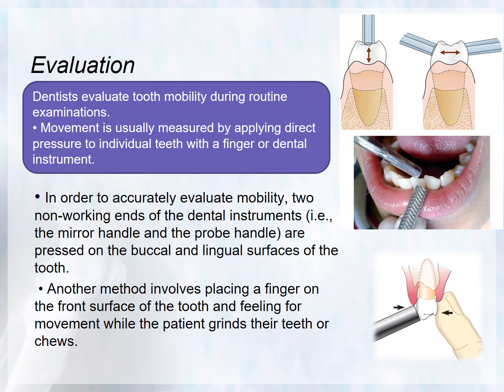To evaluate tooth mobility during routine examination, movement can be measured by applying direct pressure to individual teeth with a finger or a dental instrument. To accurately evaluate tooth mobility, two non-working ends of dental instruments can be used — the mirror handle and the probe handle — pressed on the buccal and lingual surfaces of the tooth, as clearly seen in the diagram.